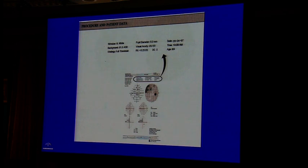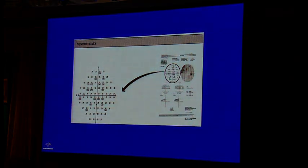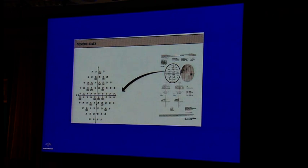Other background information includes pupil diameter and visual acuity, which need to be correlated. Pupil diameter should be at least 3 mm for reliable visual fields and should remain consistent across repeat visits. The numeric data gives retinal sensitivity values at each tested point in decibel units. Higher numbers represent better retinal sensitivity.